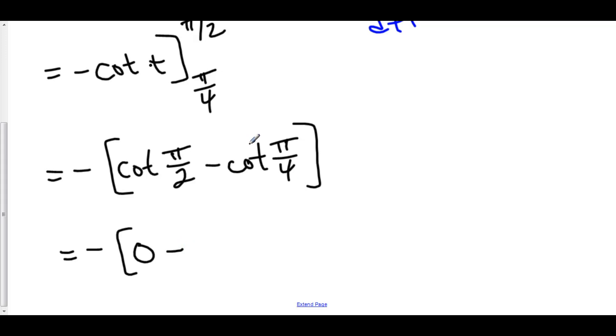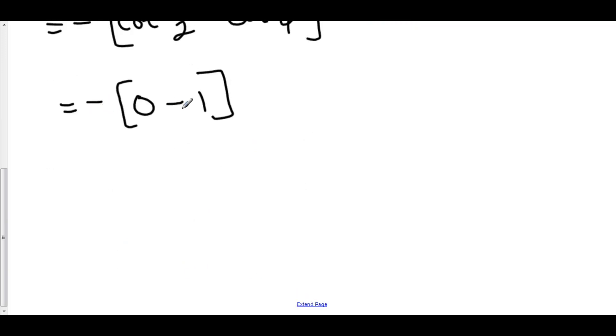Well, that's again root 2 over 2 over root 2 over 2 and that's 1. So, the answer is negative negative 1 which is positive 1. Trig, very easy with integrals by hand. Just memorize your formulas and you'll be fine.